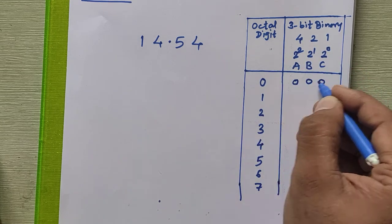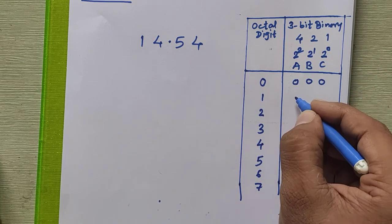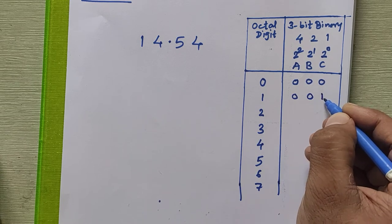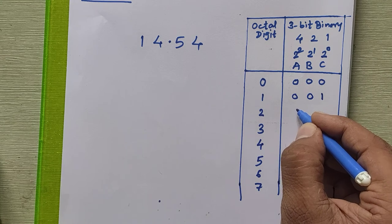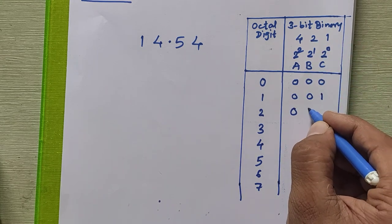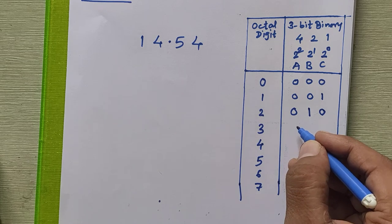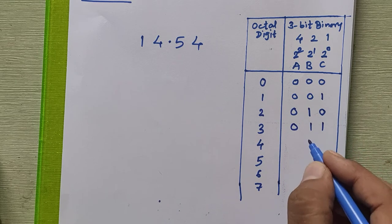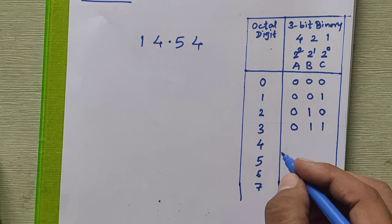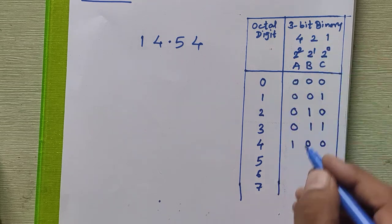Now, how to represent 0 in this 3-bit binary? Just write 0 0 0 — all bits are 0, so adding them gives 0. For 1, it is 0 0 1 — adding gives 1. For 2, it is 0 1 0 — the '2' bit is 1, giving 2. For 3, we need 2 plus 1, so the last two digits are 1: 0 1 1.